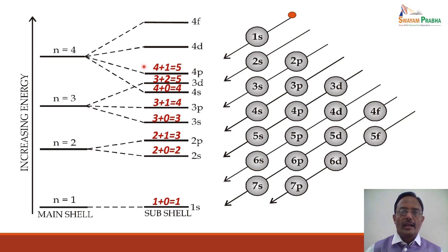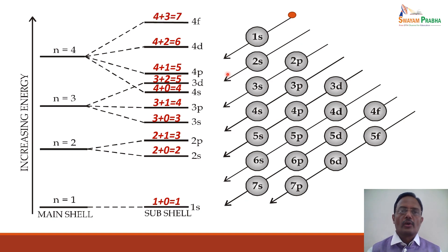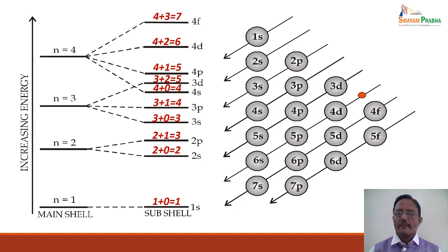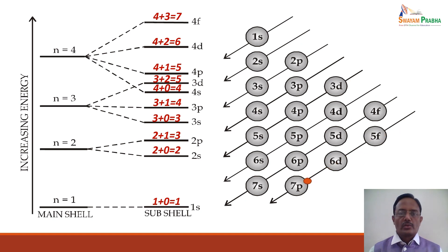The filling order according to the Aufbau principle is: 1s, 2s, 2p, 3s, 3p, 4s, 3d, 4p, 5s, 4d, 5p, 6s, 4f, 5d, 6p, 7s, 5f, 6d, 7p, and so on. So when 1s is completely filled with 2 electrons, then 2 electrons go to 2s, then 6 electrons to 2p, then 3s, then 3p, then 4s, then 3d, and continuing in this order.